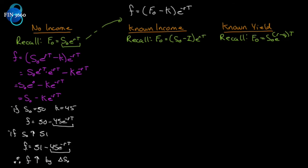If the spot price goes down a dollar, the contract value goes down a dollar. Because we've expressed the value as a function of the spot price minus a constant term, no matter what the spot price is we're always subtracting the same constant. So if the underlying asset is up five dollars in a day, the long side is up five and the short side is down five. We've expressed it as a function of an observable underlying asset price minus a constant — isn't that elegant? Can we do the same for known income?